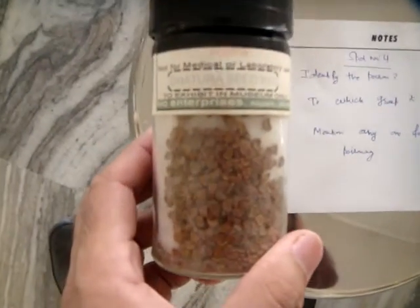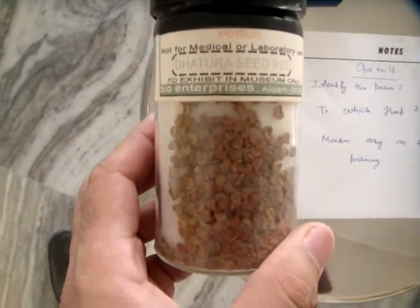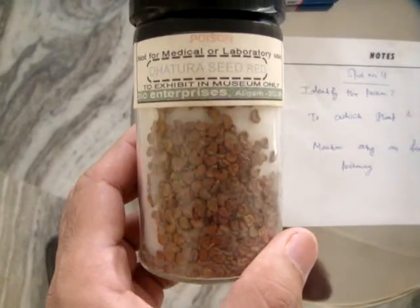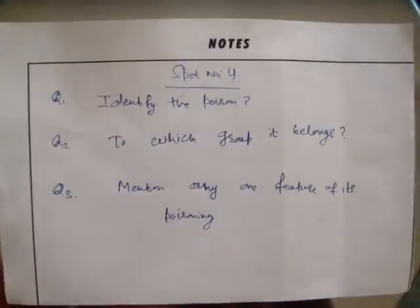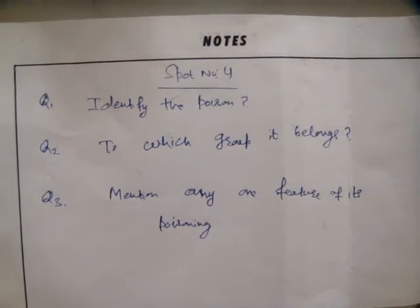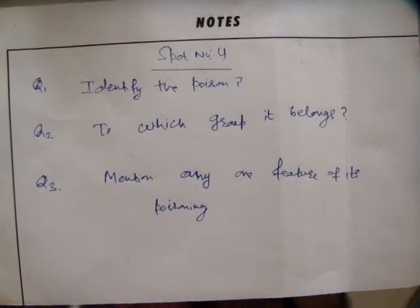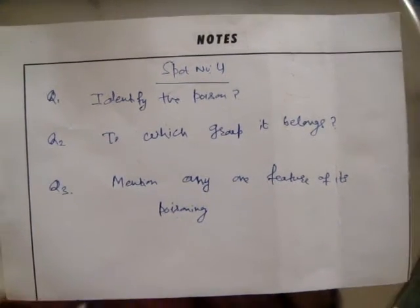Now the next spot: datura seeds, and the questions. Identify the poison and to which group it belongs, and mention any one feature of its poisoning.